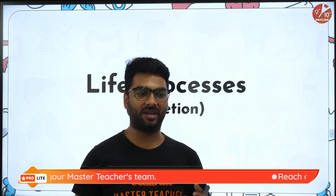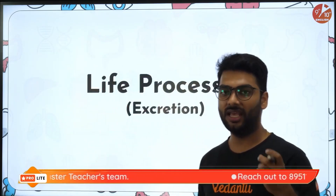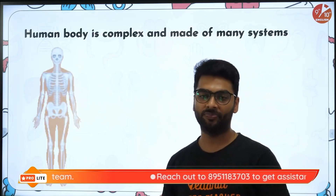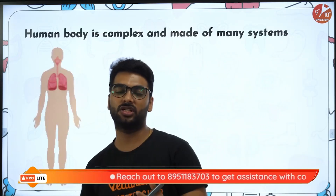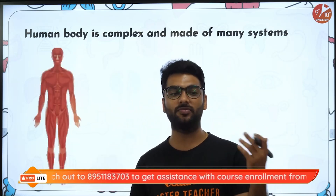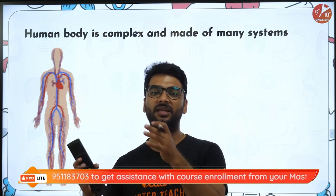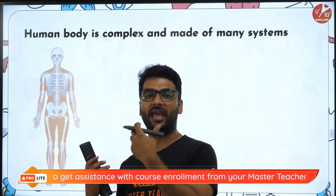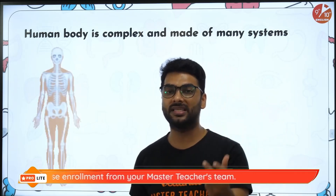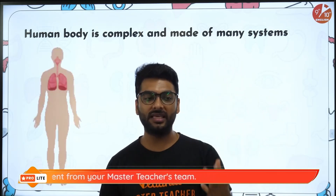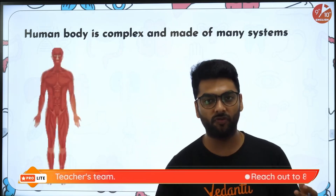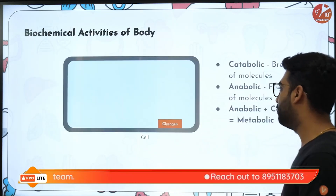When talking about the process of excretion, it is required to remove the nitrogenous waste from the body. Your body produces nitrogenous waste like urea, and they have to be removed from the body regularly, because if they accumulate in the body they will cause poisonous reactions. These nitrogenous waste products turn toxic, and that is why they have to be removed from the body through different media.